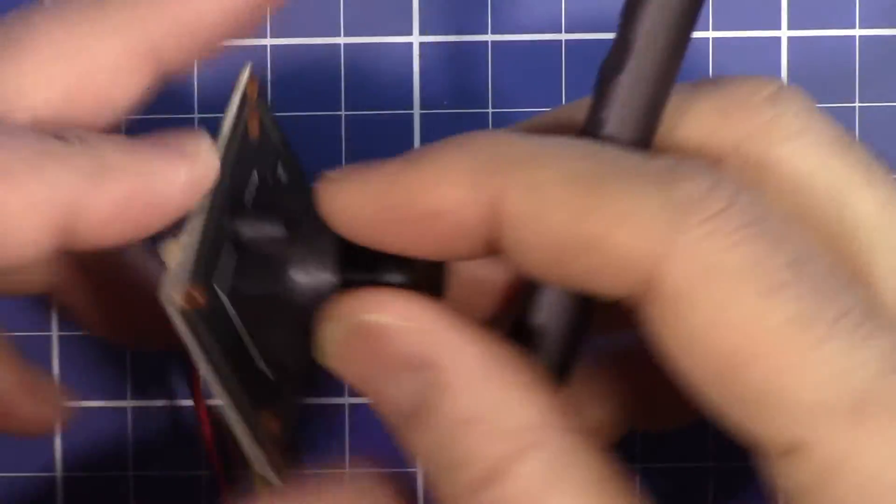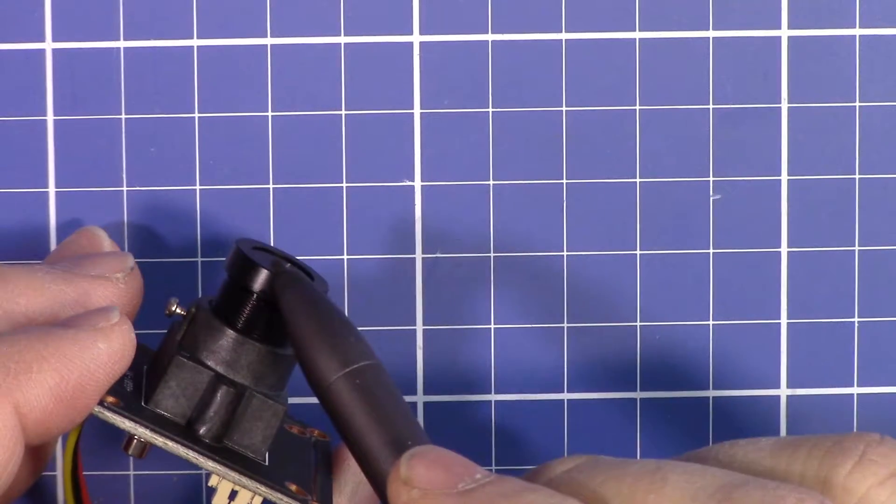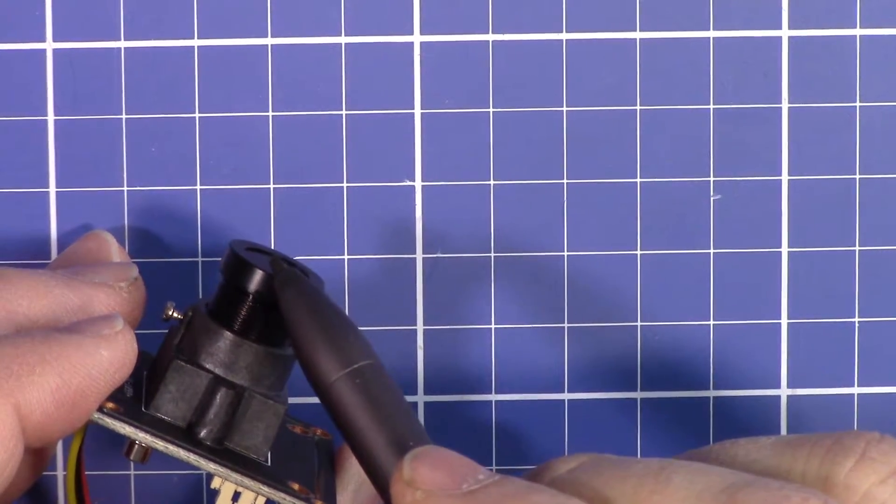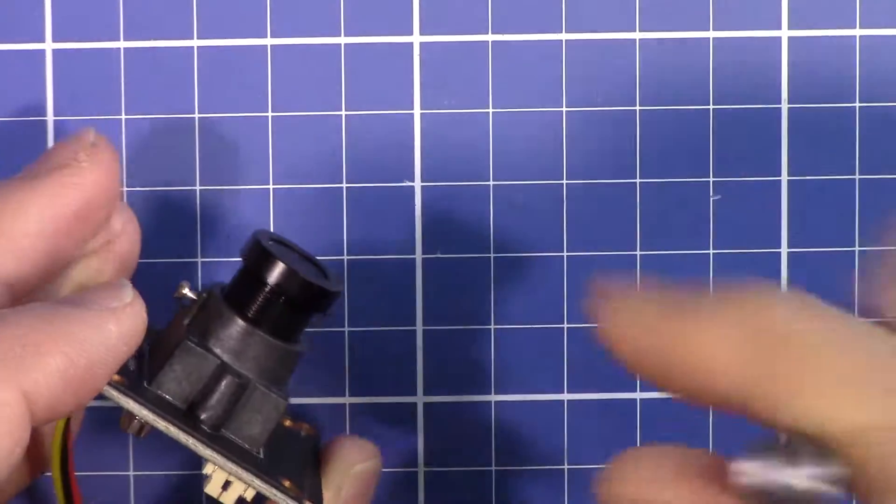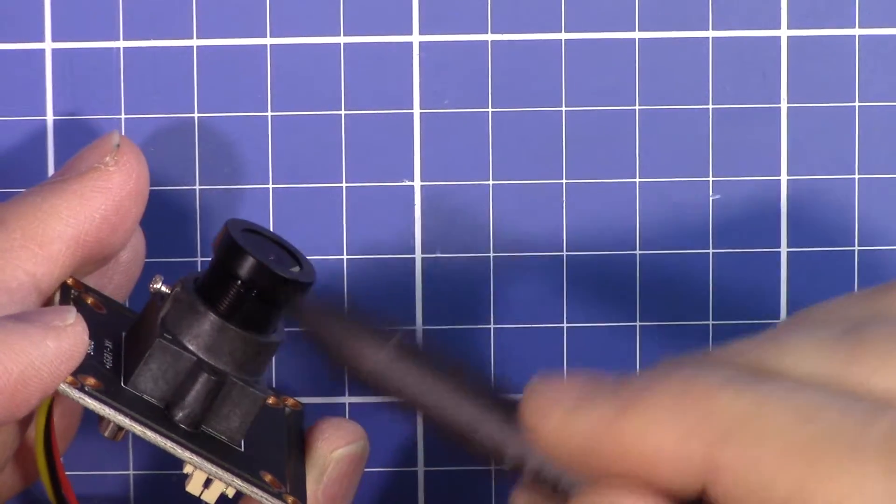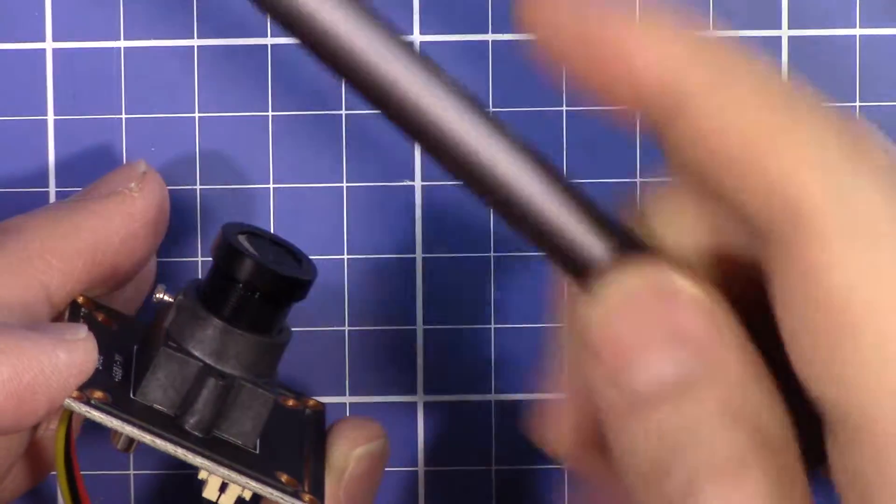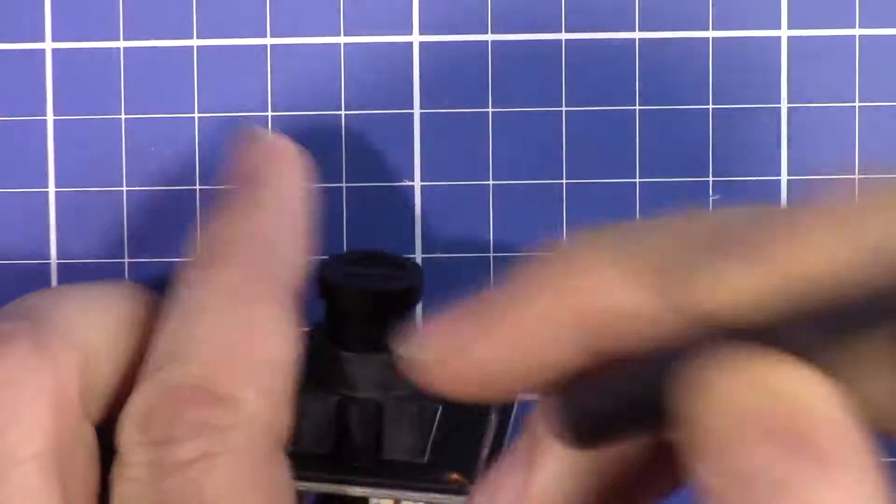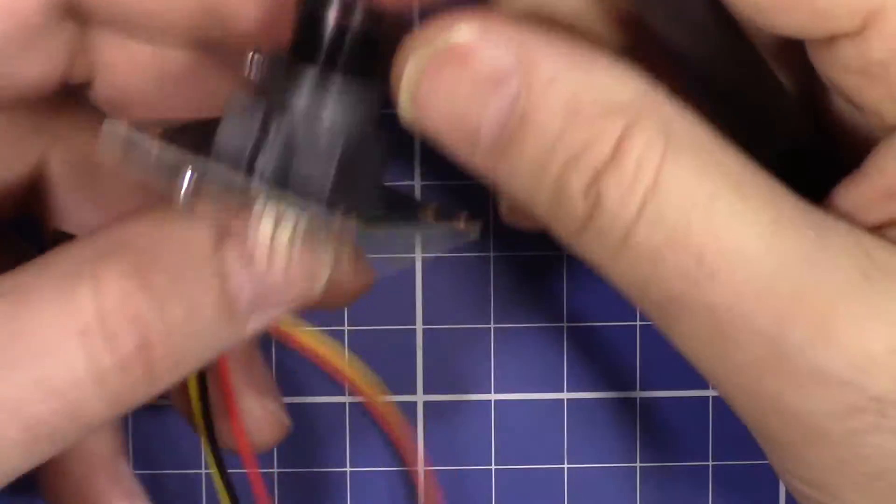The focal length of this one is 2.8 millimeters, which makes it a very wide angle view. So that's the first kind of sensor. The second one, this is 15 grams including this cable, so very lightweight.